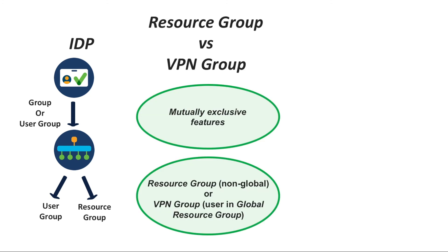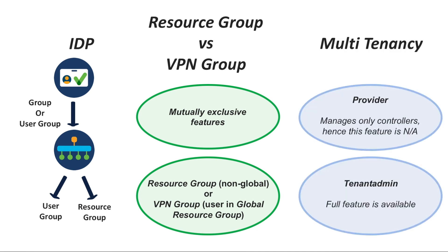RBAC based on site classifies devices, templates, and users into groups. Users configured with the resource group have full access, based on the user group, to the resources within that group. RBAC based on VPN classifies VPNs into groups; users configured with the VPN group can access only the VPN dashboard in VManage, and it is read-only access. These two features are mutually exclusive: if a VPN group is used, the user belongs to the global resource group.